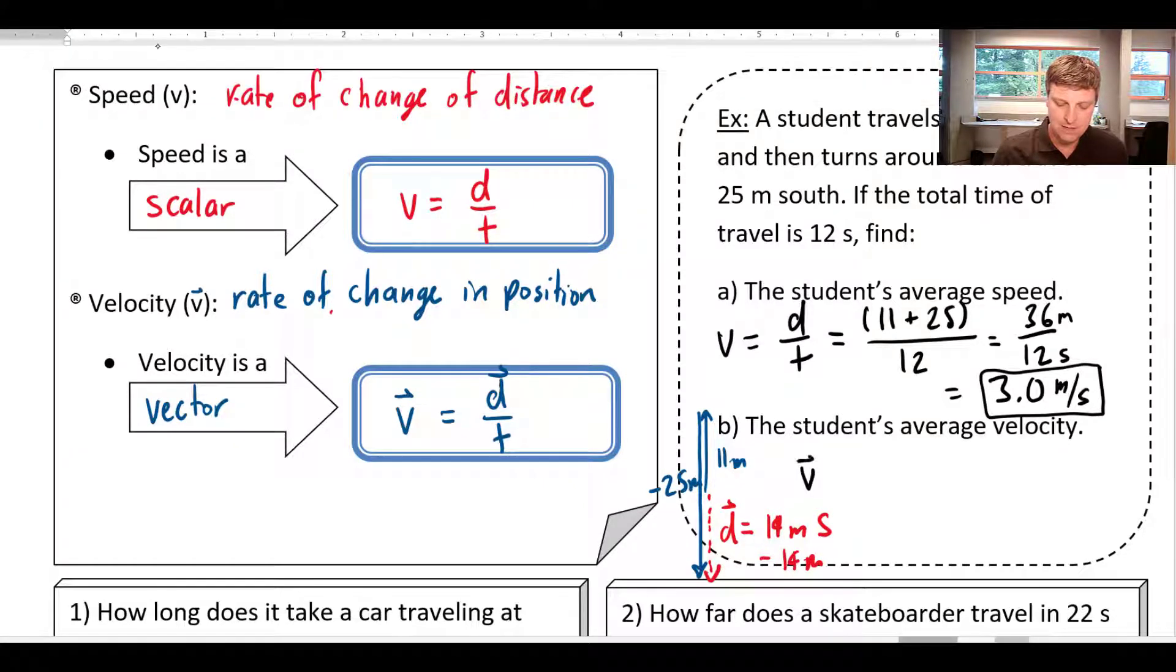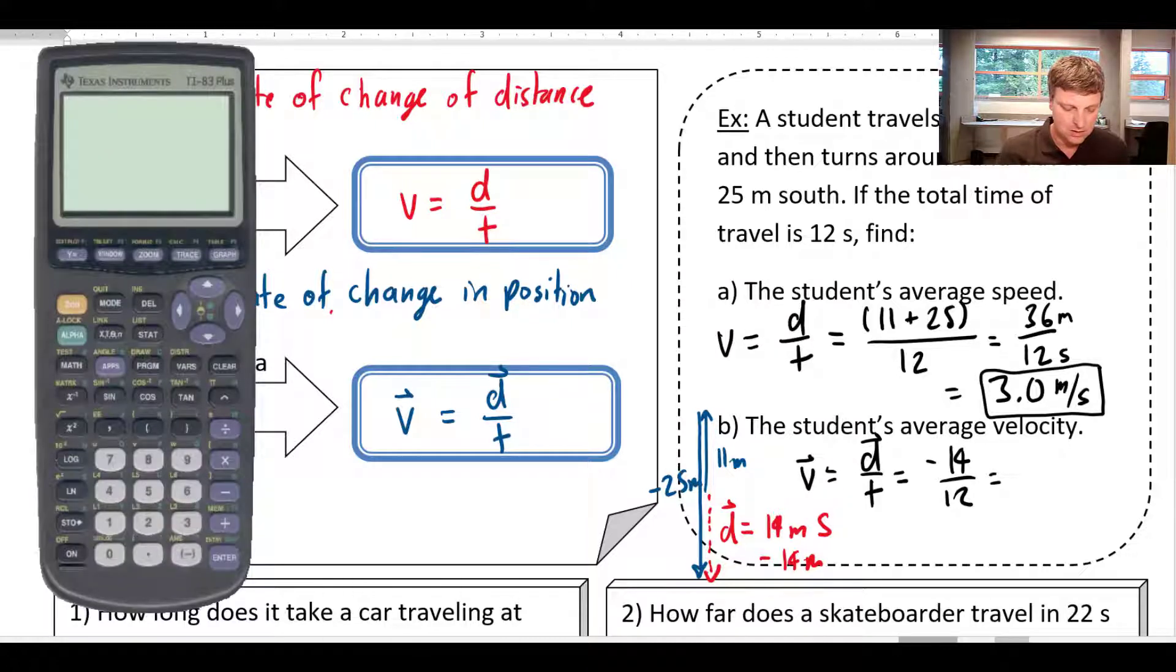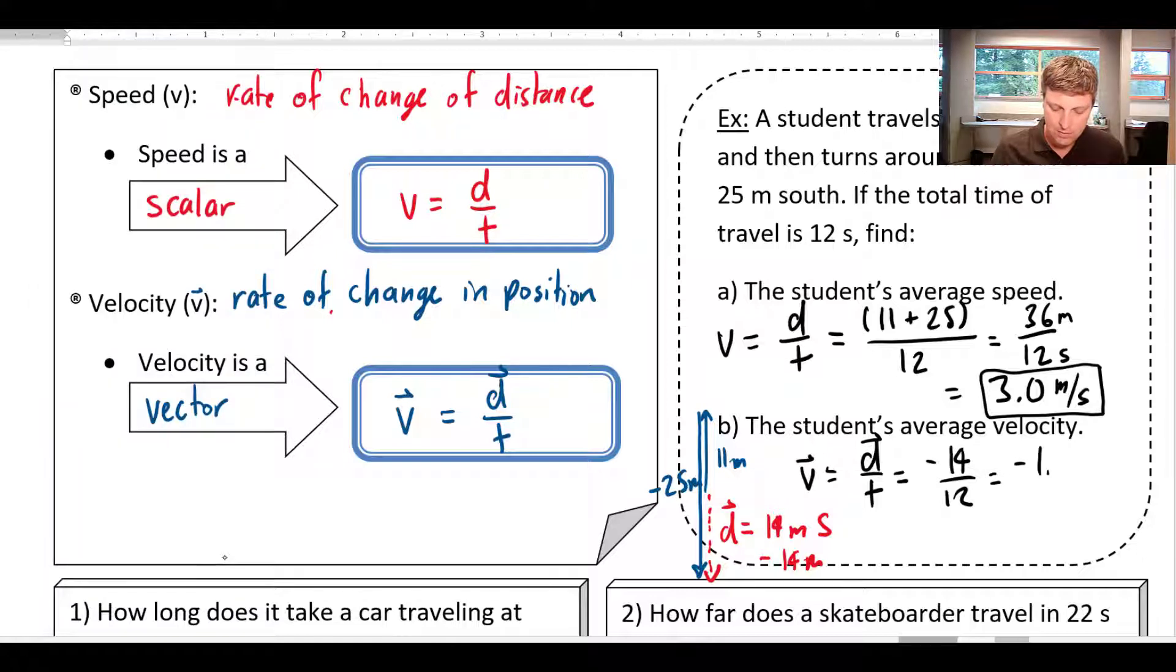So if I say V equals D over T, then I could write that as negative 14 divided by 12. And I can't do that one off the top of my head, so let's use a calculator. My answer comes out as this big long string, negative 1.16667. But I know I need to round off to just two sig figs, so I'll just call that negative 1.7 meters per second.